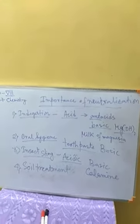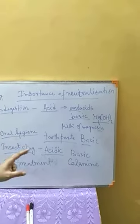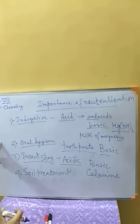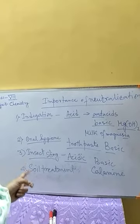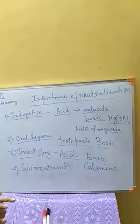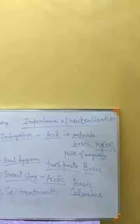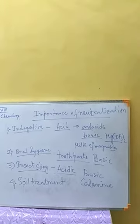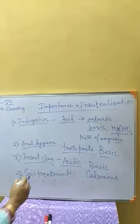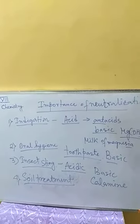So these are the four points: first, indigestion — acids produced in the stomach are neutralized by basic medicines; second, oral hygiene — toothpaste contains basic substances; third, insect sting — acidic substance from the sting is neutralized by basic medicines or chemicals like slaked lime, calamine lotion, or baking soda; fourth, soil treatment — to get proper growth of plants. These four are the importance of neutralization reaction.